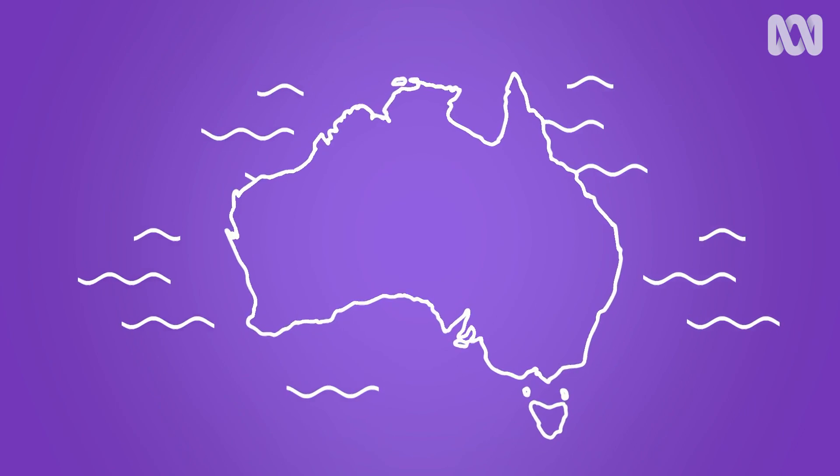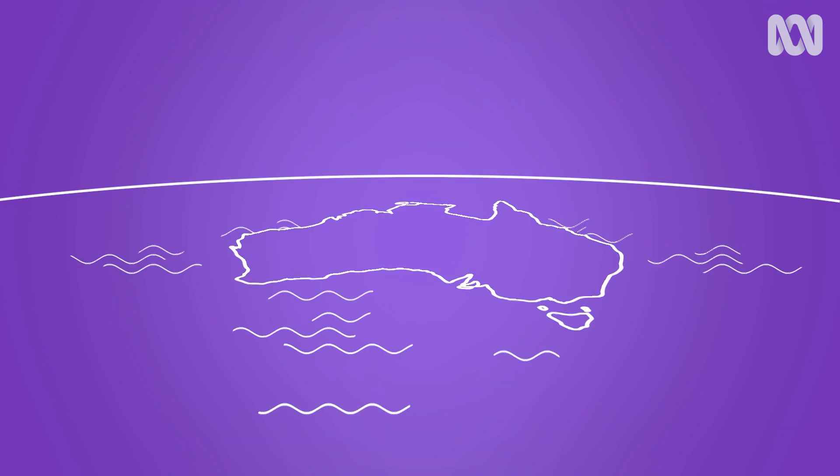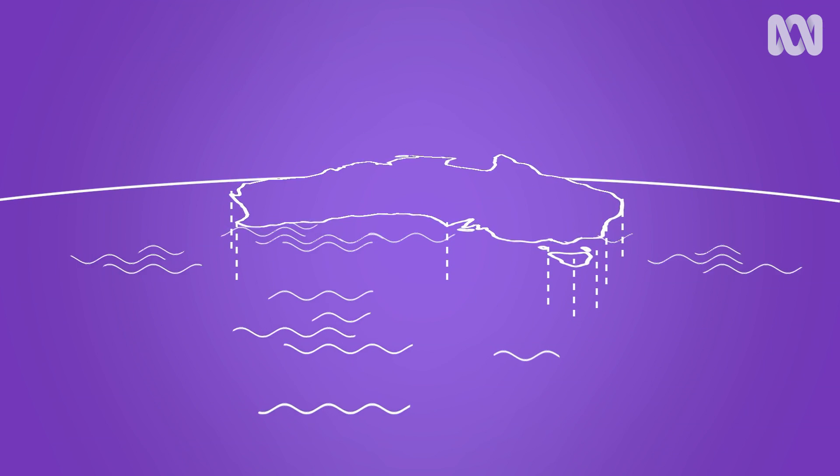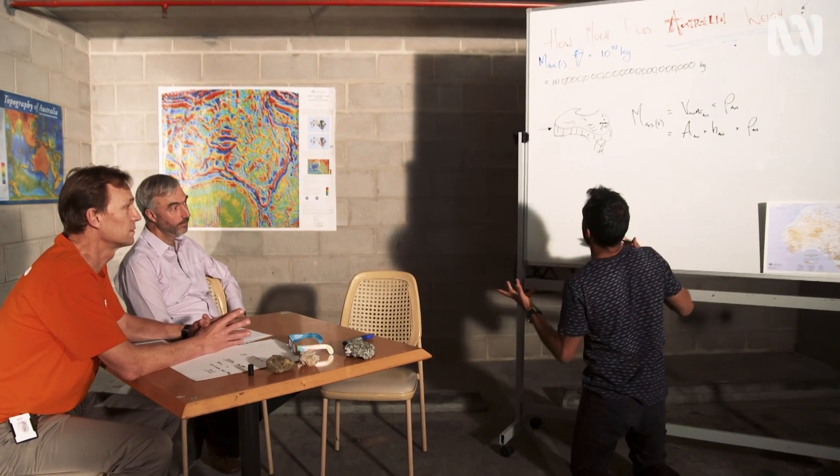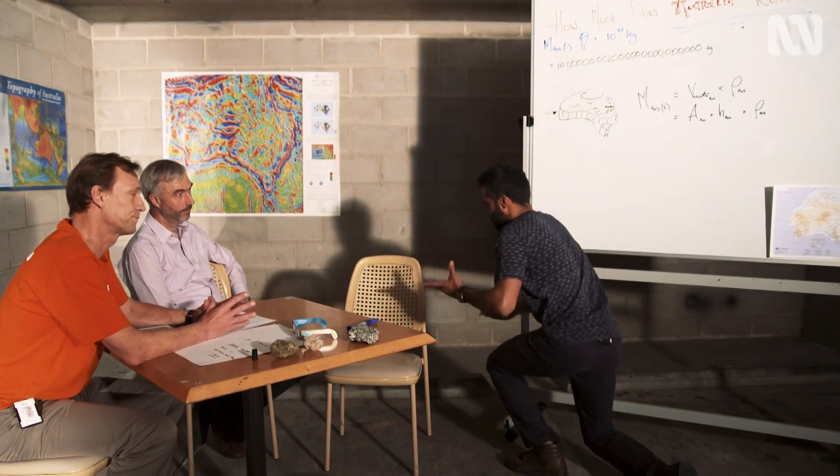The second calculation we did was to measure the weight of Australia as if we sliced a line right across the nation at sea level and popped it off like the top of a muffin. We need to figure out the average height of Australia and then the second part is to figure out the average density of Australia. So let's think about the average height of Australia first.